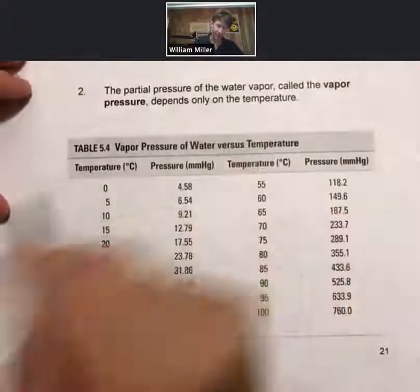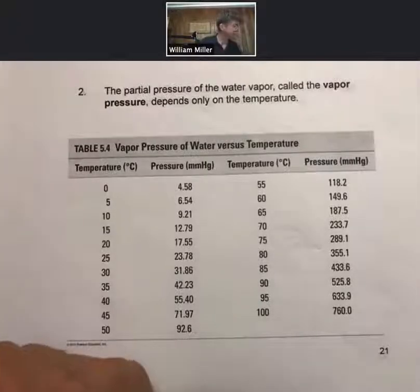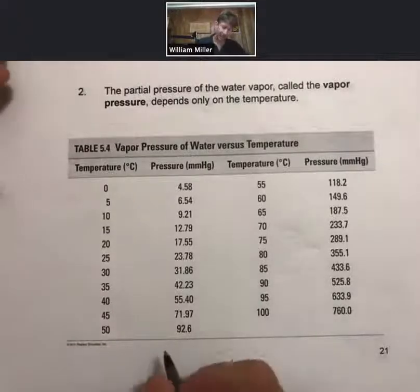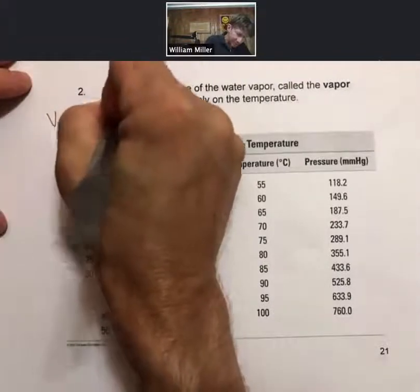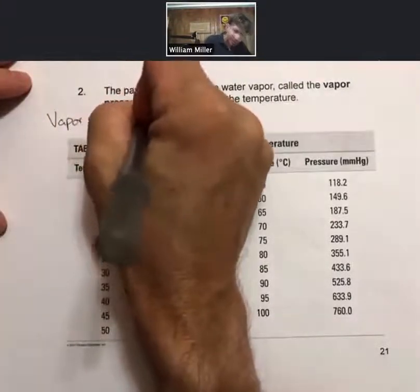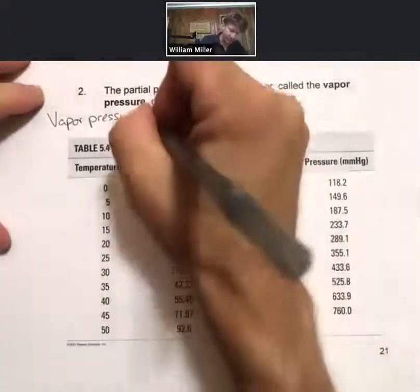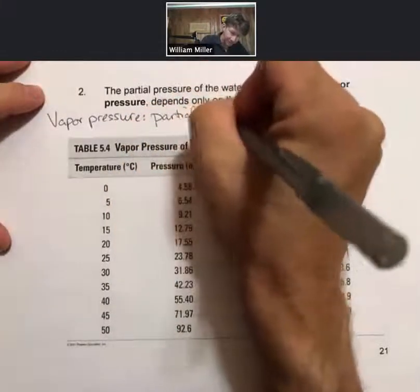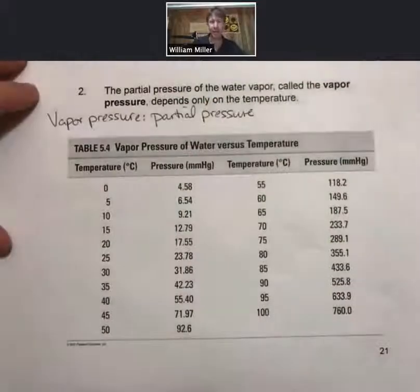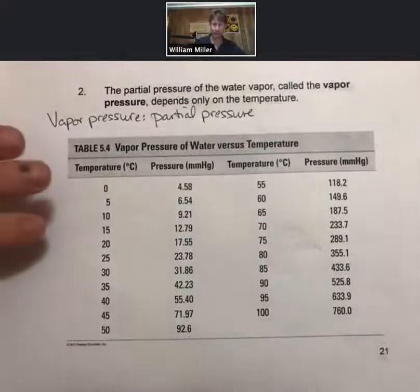The partial pressure of the water vapor, called the vapor pressure, depends only on the temperature. Let's define vapor pressure. Vapor pressure is the pressure or the partial pressure of a gas in contact with the liquid.